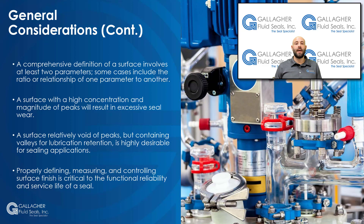A surface finish with a high concentration and magnitude of peaks will result in excessive seal wear. Surface peaks should be removed to diminish seal wear with a polishing process. Grinding without polishing can produce frequent surface peaks that will abrade and damage seals. Friction and seal wear will increase significantly if a surface finish is too smooth because the available lubricant film and reservoir depths will be substantially reduced. A surface finish relatively void of peaks but containing valleys for lubrication retention is highly desirable for sealing applications. Properly defining, measuring, and controlling surface finish is critical to the functional reliability and service life of a seal.